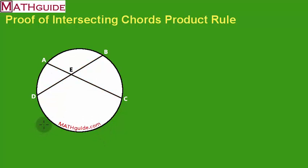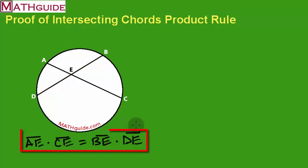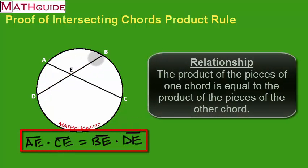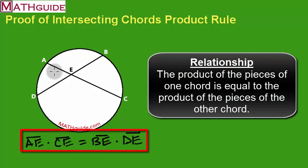So in other words, I know according to the relationship that AE times CE has got to be equal to BE times DE. And I'm going to prove that this relationship is correct. So in other words, the product of the pieces of this chord is equal to the product of the pieces of this chord.